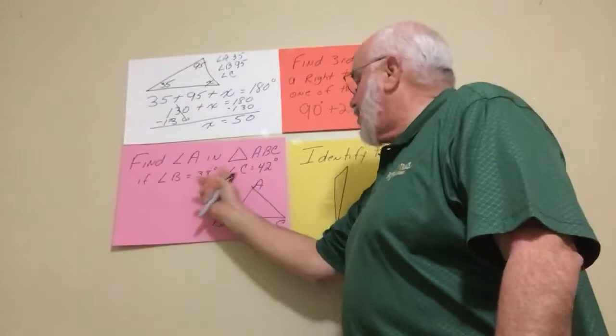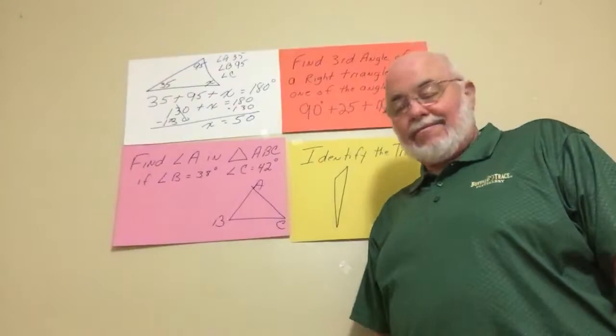So find angle A in triangle ABC if angle B is 38 and angle C is 42. They did the exact same thing here. They put these two together. You just add these two, subtract them from 180 and you're good to go.